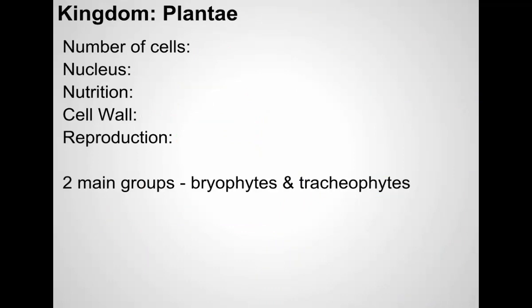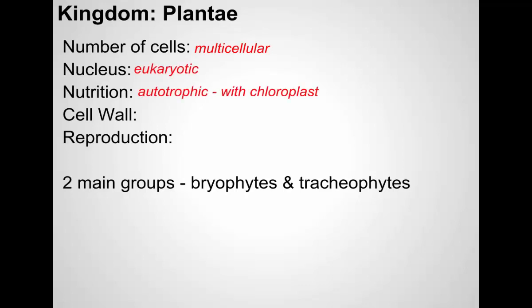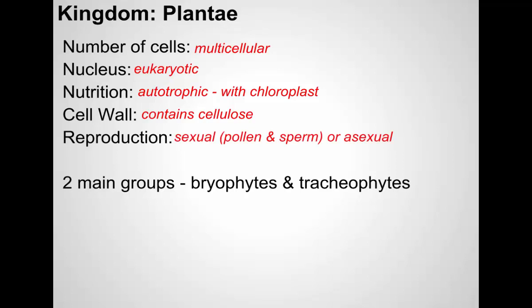Then we have the plants — the plant kingdom. Plants are multicellular, eukaryotic, and autotrophic. They have chloroplasts where photosynthesis takes place. Plant cells have a cell wall made of cellulose. They can reproduce both sexually and asexually. Pollen is a male reproductive cell in plants; ovules or egg cells are the female reproductive cell. In pollination, those cells are fertilized and begin to grow into an embryo — what we might call a seed. They can also reproduce asexually through runners, cuttings, tubers, and other methods.